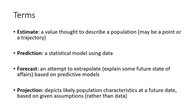An estimate is any value thought to describe a population, and that can be a single point in time or a trajectory of data through time. A prediction is a statistical model that uses some kind of data, which implies studying the past.